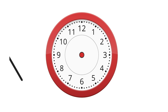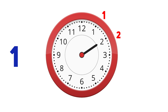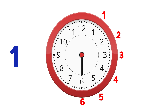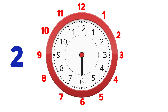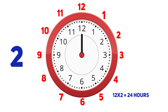Lastly, we have the hours hand. It represents the numbers on the clock as they are: 1 as 1, 2 as 2, 3 as 3, till 12 as 12. When the hours hand moves from 12 to 12 twice, it makes 24 hours and hence a day. So 12 multiplied by 2 equals 24 hours, which in turn equals 1 day.